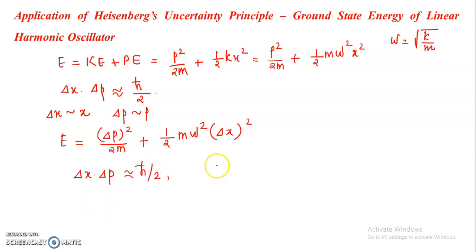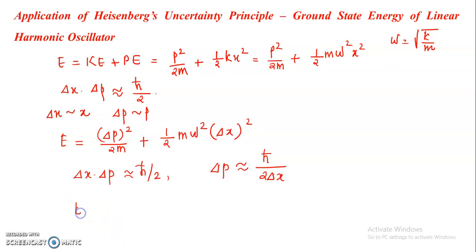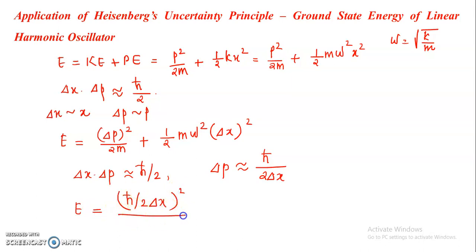We can write Δp ≈ ħ / (2Δx). Now we can substitute the value of Δp into the equation for total energy: E = (ħ / 2Δx)² / 2m + half mω²Δx².